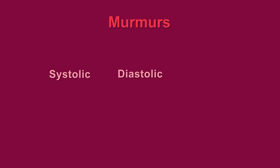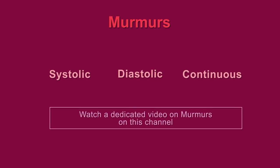Now coming to our final category: murmurs. Murmurs can be systolic, diastolic, and continuous. Continuous murmurs are not produced by cardiac abnormalities per se; instead, these are heard in patent ductus arteriosus and AV fistulae, but are included here for the sake of thoroughness. Murmurs are very important in cardiac auscultation, and we have dedicated a complete video to it. The link is given in the video description.